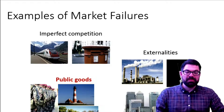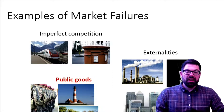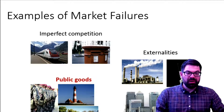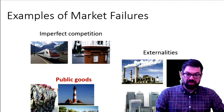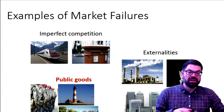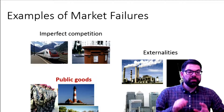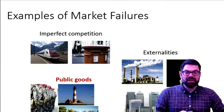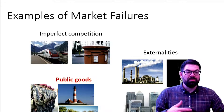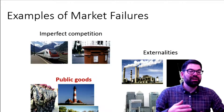Here are three types of market failures, two of which we will talk about in this course. The first is imperfect competition, which you will mainly encounter in intermediate micro and, if you're really interested, in industrial organization. What we mean by imperfect competition is, for example, monopolies or oligopolies, whereby a couple of firms dominate a given market.